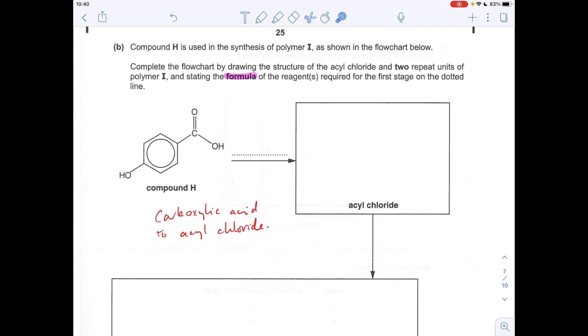Okay, so the last part of the question, we've got to go from compound H to an acyl chloride. So essentially we're going to convert this carboxylic acid group to an acyl chloride group. And that's done by reacting with thionyl chloride. But we've got to give the formula. And that's SOCl2. So the acyl chloride would look like that.